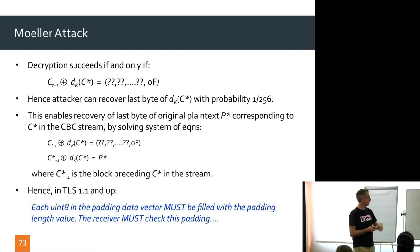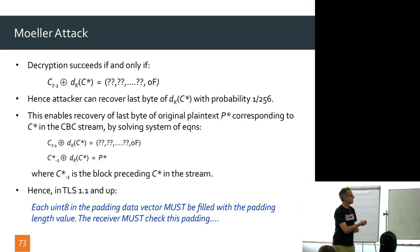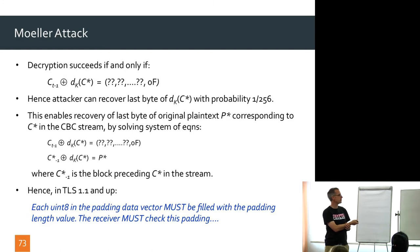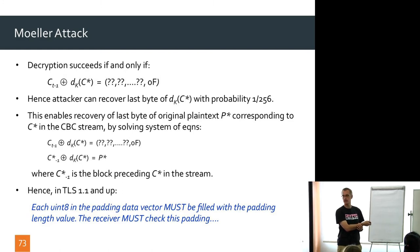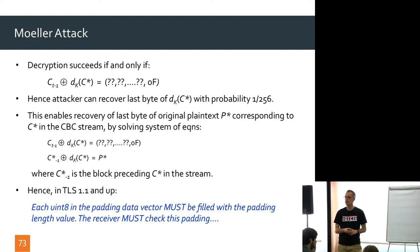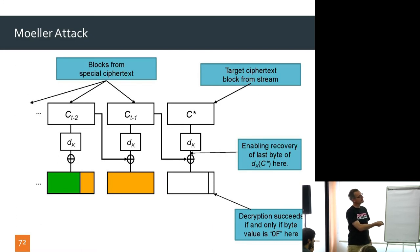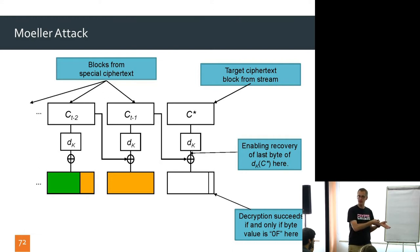In TLS 1.1 and higher, each byte added in the padding vector must be filled with the padding length value, and the receiver must check this. You have to look byte by byte and check the padding has the right format. That would stop Möller's attack, because you might get the right value in the last position but can't fill the entire block correctly.